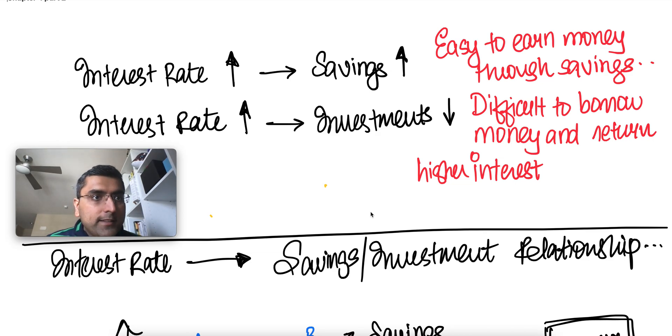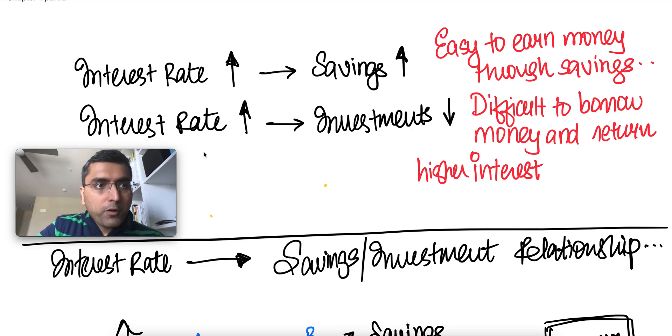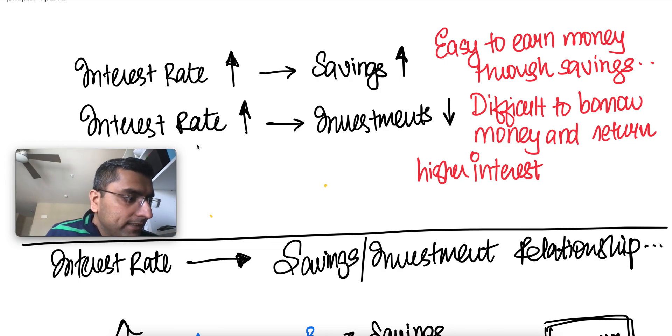Hello, this is part two of chapter four. We're going to go a little bit more in-depth and clarify a few things from part one. Chapter four is savings and investment in closed and open economies.